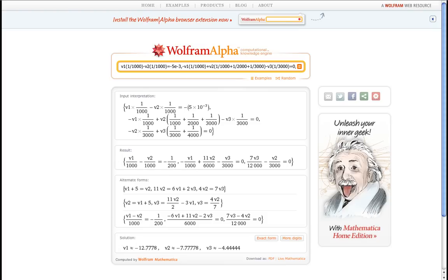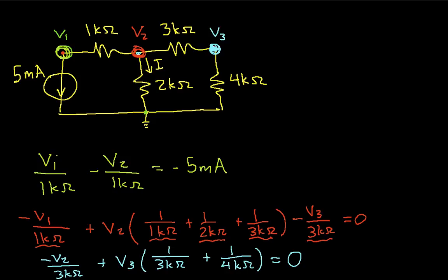So I go back to my original drawing, and we can say now that V1 is minus 12.78 volts, V2 is minus 7.78 volts, and V3 is minus 4.44 volts. They should all have volts after them. So that tells us the node voltages. These node voltages are the voltage between that node and our reference node.